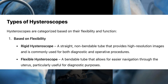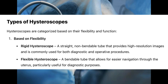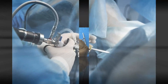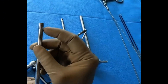Types of hysteroscopes. Hysteroscopes are categorized based on their flexibility and function. Based on flexibility: Rigid hysteroscope — a straight, non-bendable tube that provides high-resolution images and is commonly used for both diagnostic and operative procedures. Flexible hysteroscope — a bendable tube that allows for easier navigation through the uterus, particularly useful for diagnostic purposes.